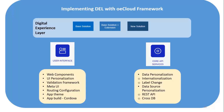One approach is to make an altogether new solution, in which case you make use of the core API services to get the models done. Once the models are done, relationships can be established, validations can be built in, and then we can take care of data personalization, internationalization, label changes, and data source personalization. As a result, we get REST APIs, Node APIs, and can build cross-DB capabilities.